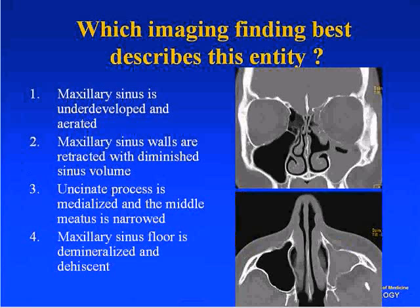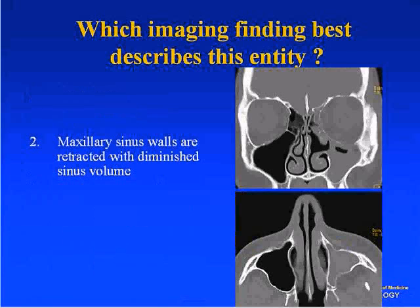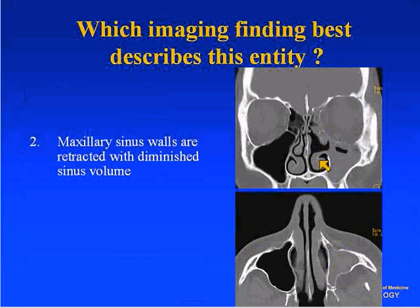On the axial image, the lateral wall is retracted and the retromaxillary fat is enlarged. It is typically the orbital floor that herniates downward into the maxillary sinus, resulting in the patient's symptomatology — often presenting with visual changes or pain. The other key finding is the enlarged middle meatus, with the uncinate process typically lateralized.